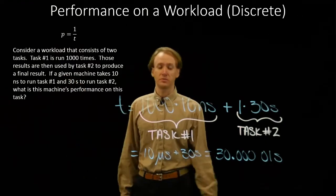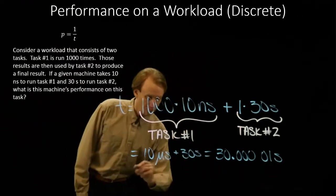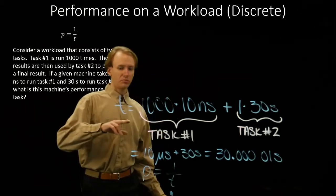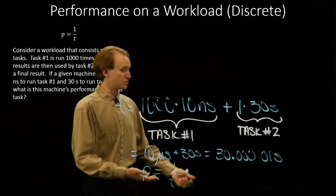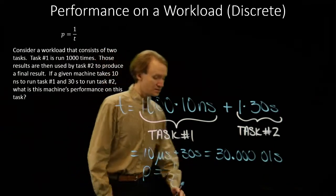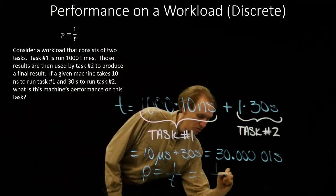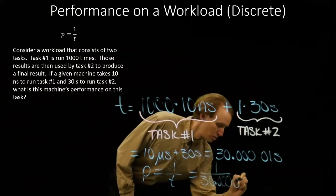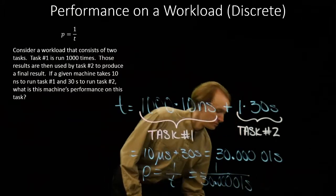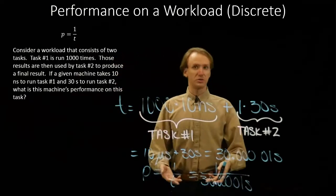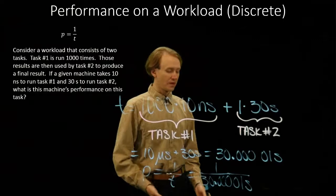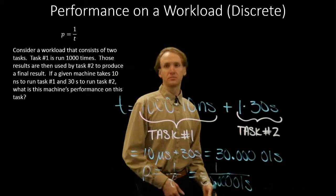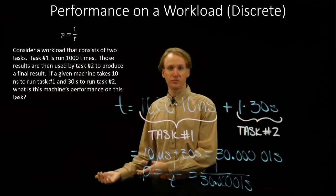Now I can just plug that into the performance equation and say that performance is 1 over time. My time is 30.00001 seconds. And I can turn this into a decimal and get an actual answer out if I wanted. But it's not going to be too different from the 30 second task that we saw in the previous examples.